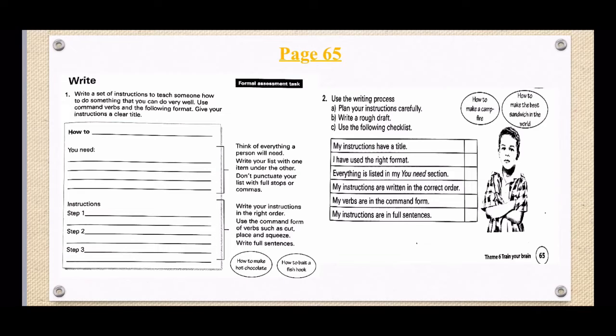So on page 65, the heading is write. Number 1 says, write a set of instructions to teach someone how to do something that you can do very well. So they want you to write instructions about something that you know how to do very well. Use command verbs and the following format. Give your instructions a clear title. So you can see there they gave us a little block and it reads how to and then there's you'll need and lines and instructions, step 1, step 2, step 3 and lines. So that block is your format. That's how you should write it in your workbook.